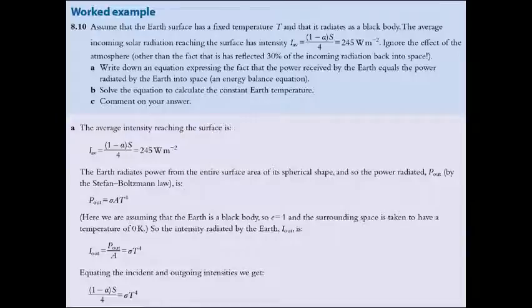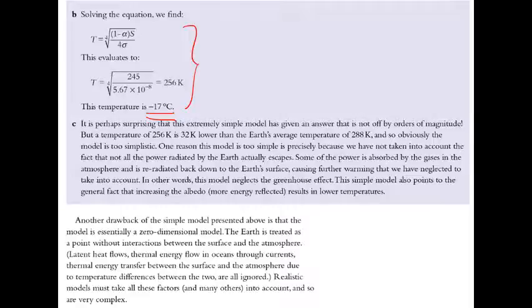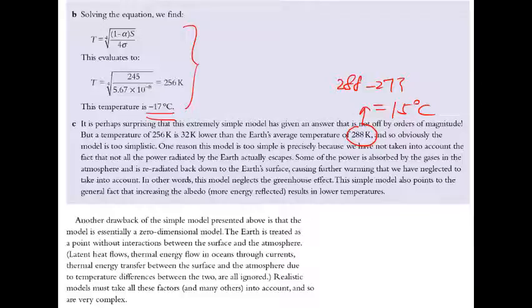From the textbook answers, the key point is that you use the Stefan-Boltzmann law for the power output — that is the connection between albedo and the Stefan-Boltzmann equation. For part b, the calculated temperature comes out to about −17°C, but the actual average Earth temperature is approximately 288 K (15°C).